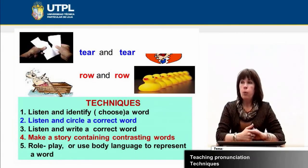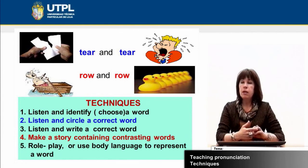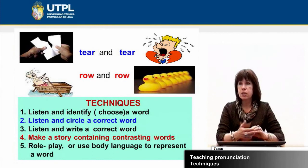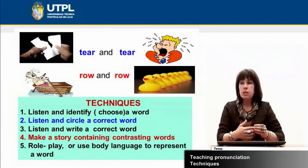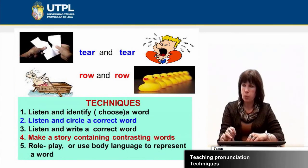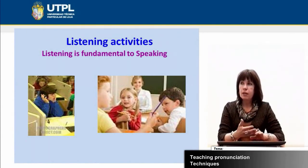Having these words in front of their eyes helps students increase and improve their knowledge of sounds. Some summary techniques to know: listen and identify or choose a word is the basic technique; then students may listen and circle a correct word, listen and write correct words — making a combination of listening and writing — and make a story containing contrasting sounds, role plays, or use body language to represent a word, which could be very fun.